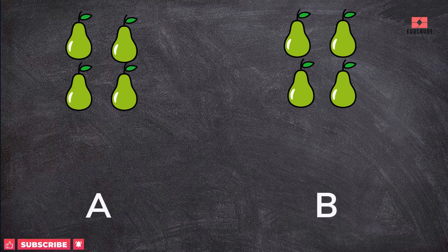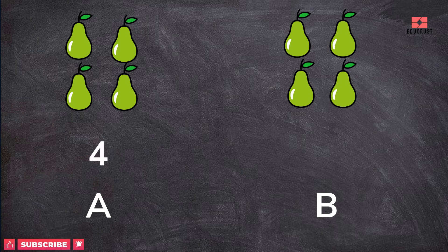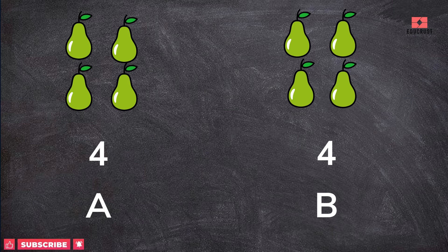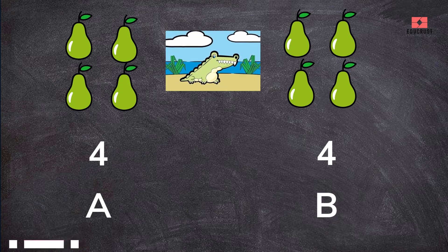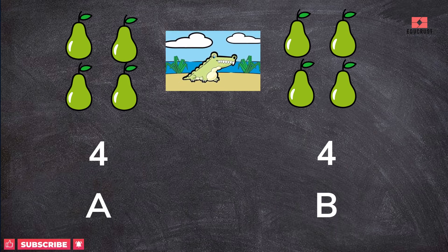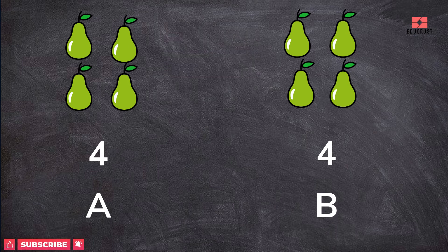Look at the pictures A and B. A has four bears and picture B has four bears. Both have the same number of bears, so the crocodile is confused as to which number to eat and will not open his mouth.